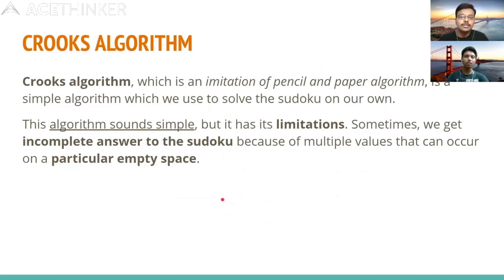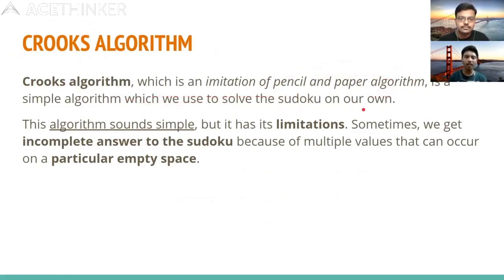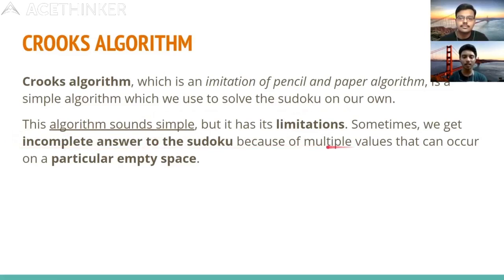Our next algorithm is the Crooks algorithm, which imitates the pencil-and-paper approach. We eliminate choices and fill empty spaces based on what's possible. However, it has a limitation: after filling some choices, we may reach a cell where no unique choice can be determined. In such cases, we cannot completely solve the Sudoku because there is no backtracking in this approach.